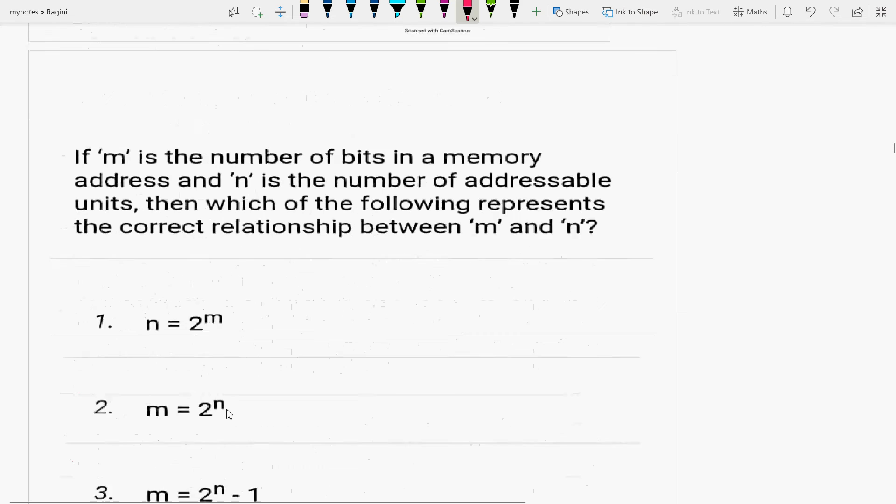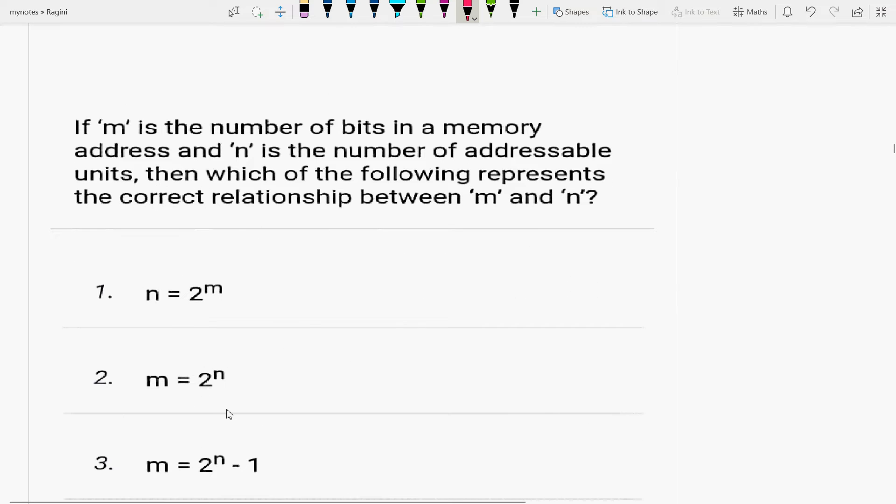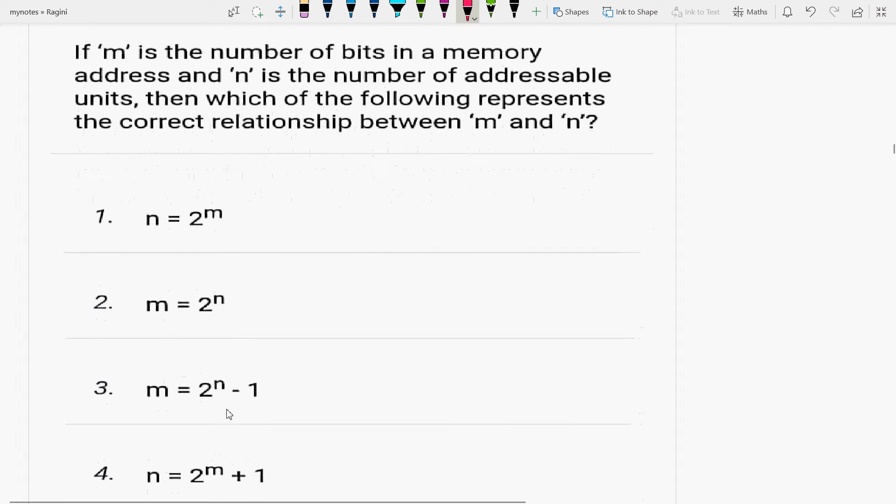Next question: if m is the number of bits in a memory address and n is the number of addressable units, then which of the following represents the correct relationship between m and n? m is the number of bits and n is the number of addressable units. Then n equals 2 to the power m.